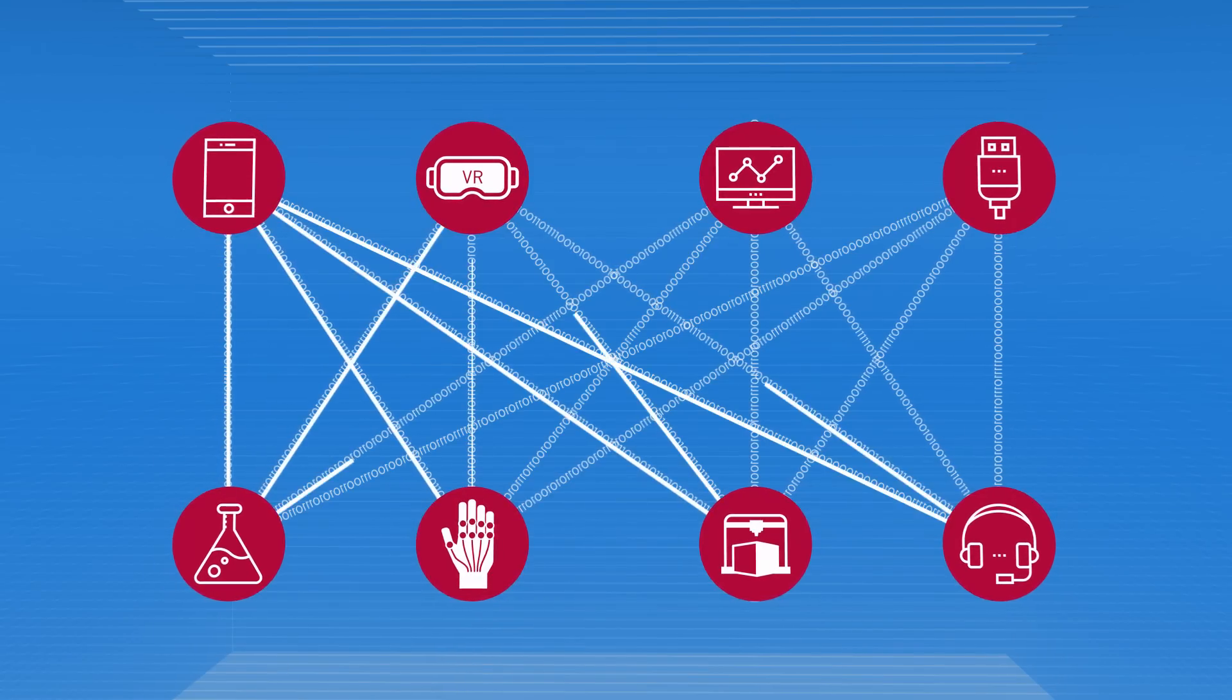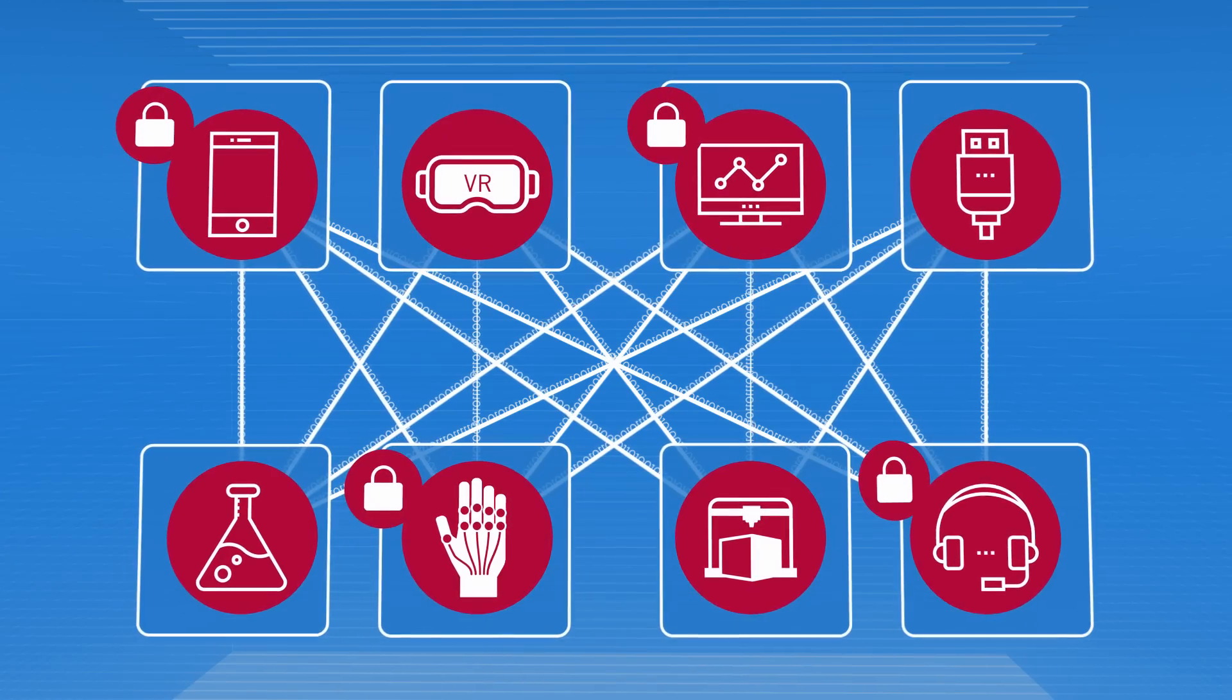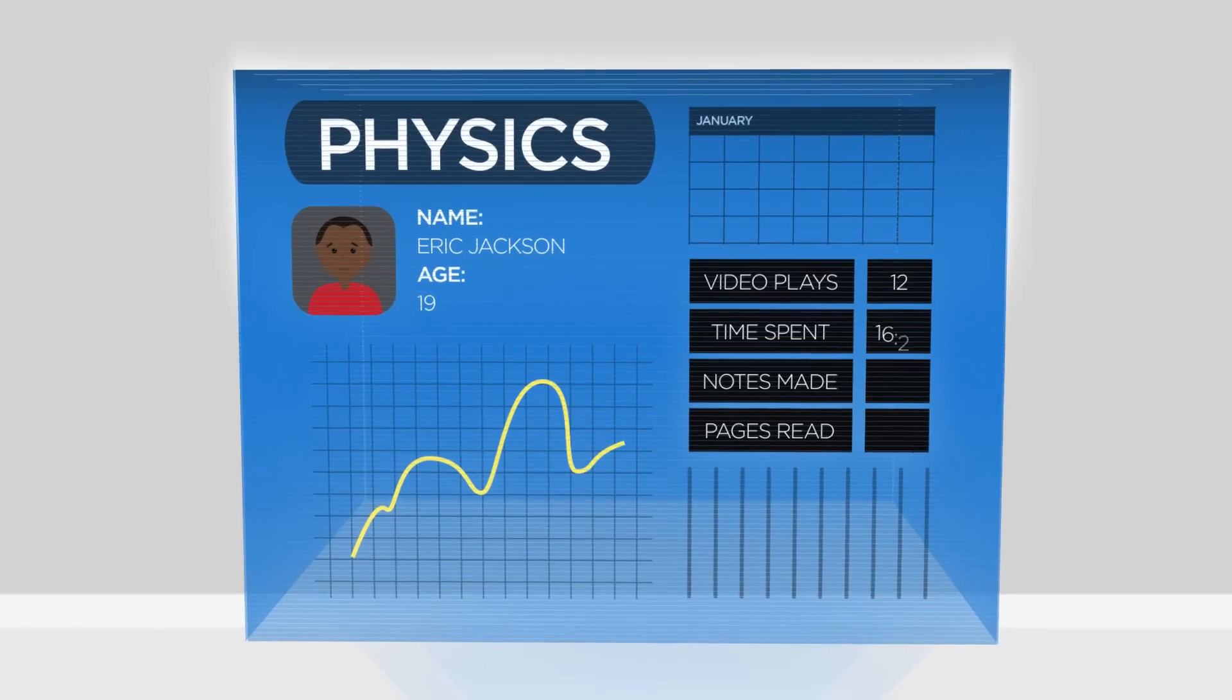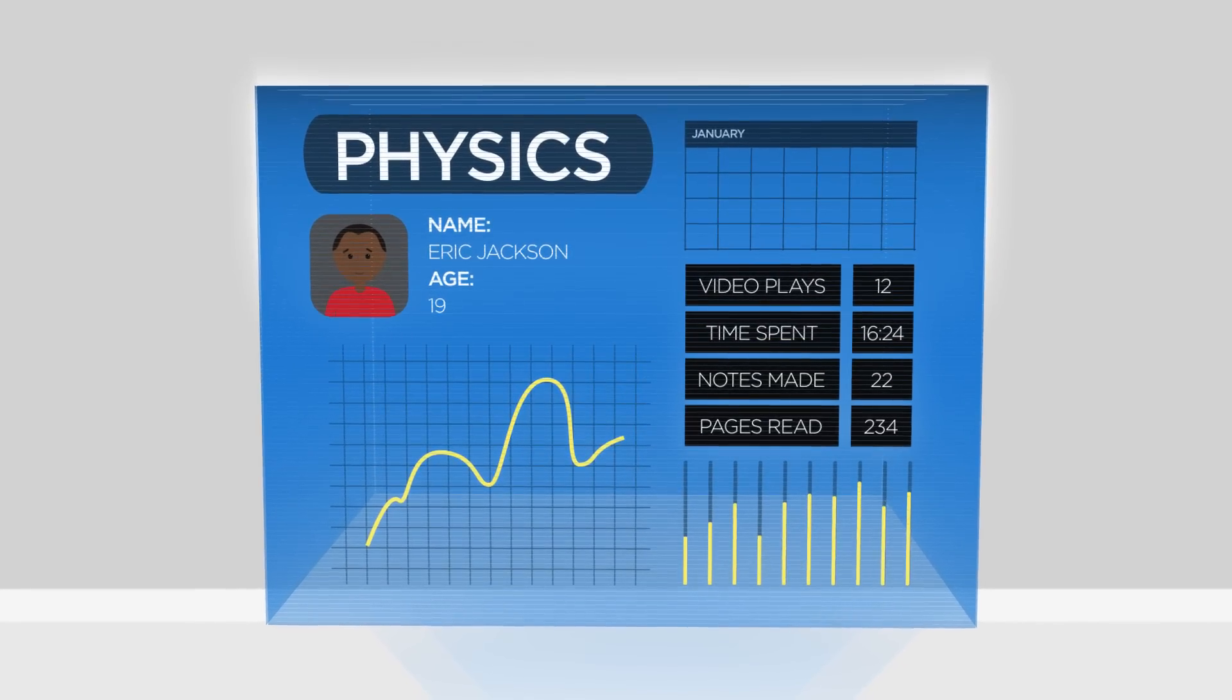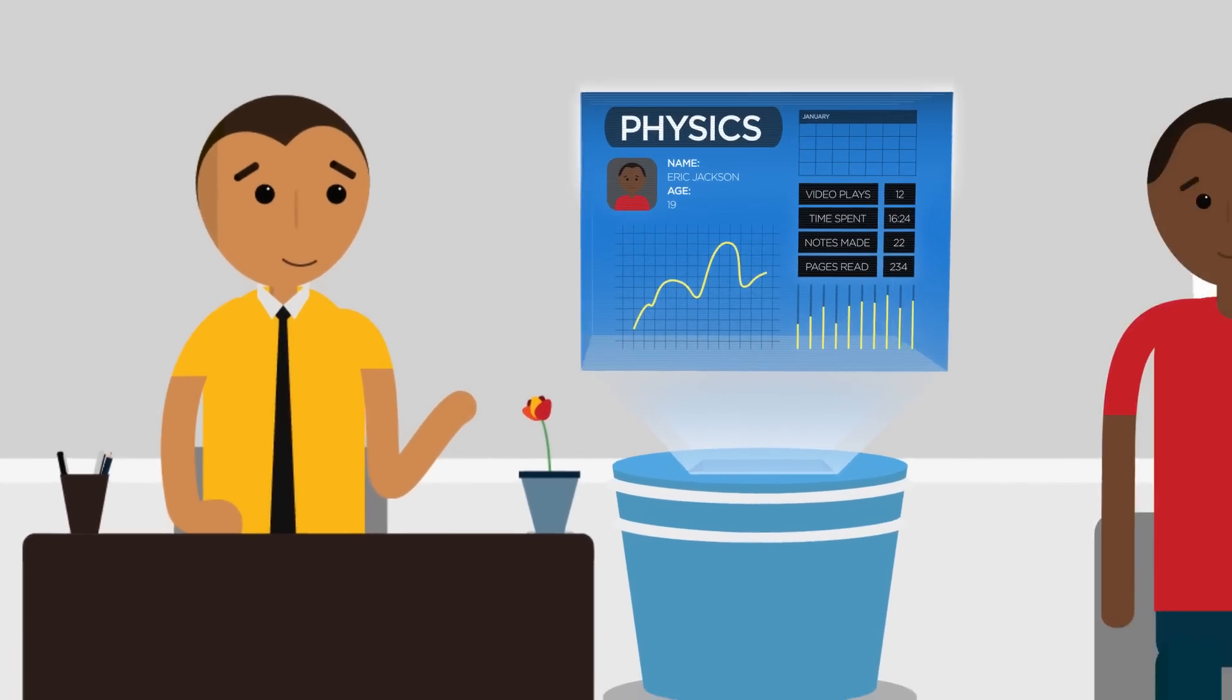As the interconnectedness of data and systems expands, security and privacy must be taken into account. Institutions must be attentive to faculty autonomy and student agency, ensuring that data and technology complement human judgment and personal experience.